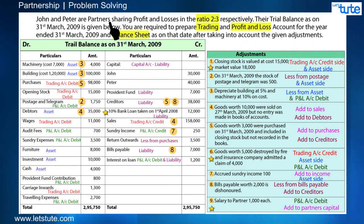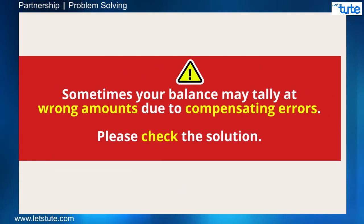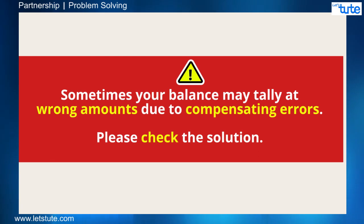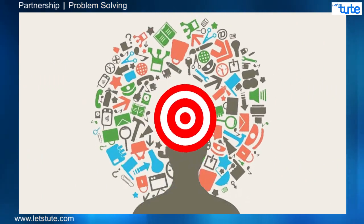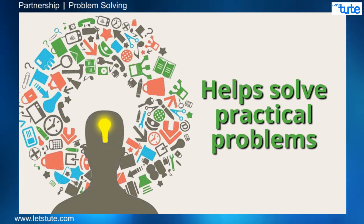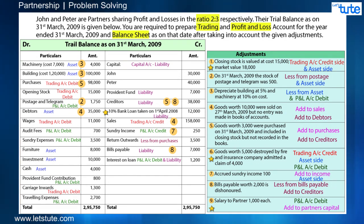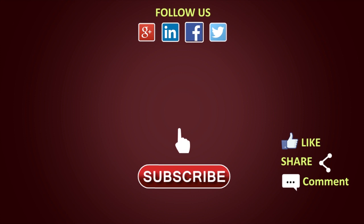Please go through the question once and check that we have considered all the items and given proper effects to all the adjustments, because sometimes there might be compensating errors or one or more adjustments might be skipped entirely — that will still tally the balance sheet but at a wrong figure. With the required knowledge and concentration, it would be very simple and interesting to prepare the final accounts. I hope you all understood this problem-solving session. We will be back with more questions on partnership final accounts — stay tuned, keep watching and keep learning. Thank you.